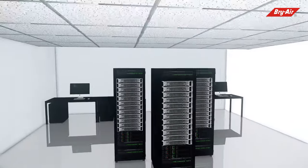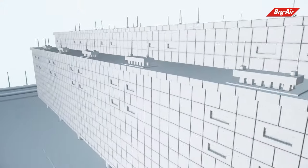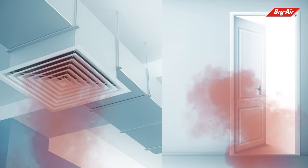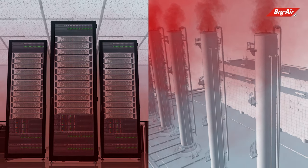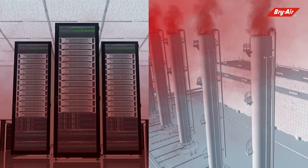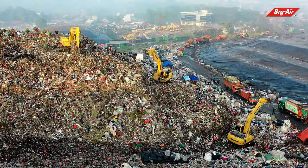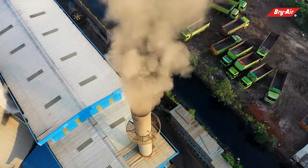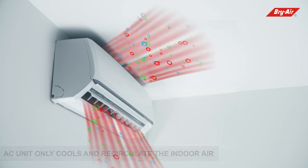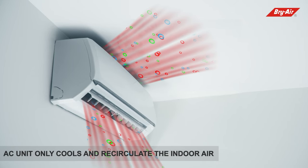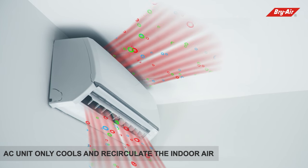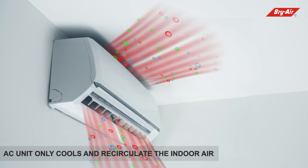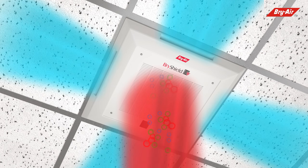When corrosive gases intrude the server room through frequent door opening or ventilation — especially when the server room is located near contaminated pollutant sources like sewage drains, landfill sites, or process industries — people often think the AC unit cleans the corrosive gases. But it only cools and recirculates the indoor air, whereas the compact Dry Shield cleans the contaminated air in the server room.